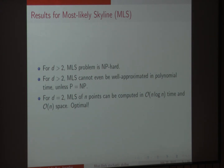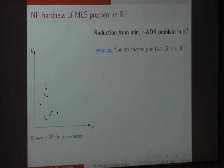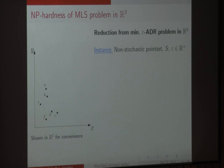Let's begin with the NP-hardness result. We're going to do a reduction from a known NP-complete problem called the minimum epsilon-ADR problem in R3. Here ADR stands for Approximately Dominating Representation. The instance consists of a non-stochastic point set S and a positive real number epsilon.